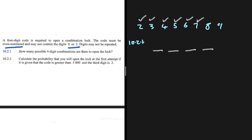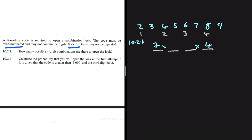The other condition is that the code must be even-numbered. If the last digit of the code is even, then the code itself is even. So we need an even number to occupy the last spot. The even digits available are two, four, six, and eight — four possible digits for the last spot. After placing one digit there, we have seven remaining for the first spot, six for the second, and five for the third.